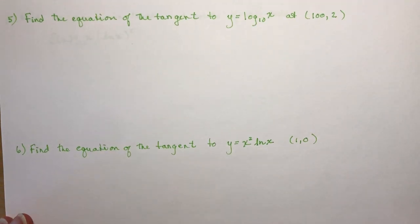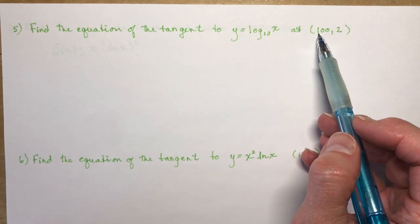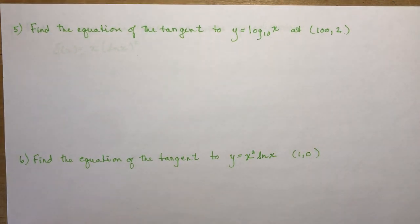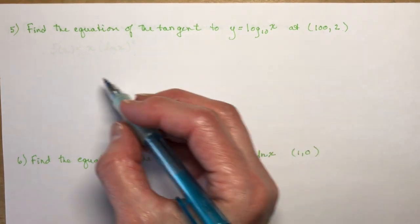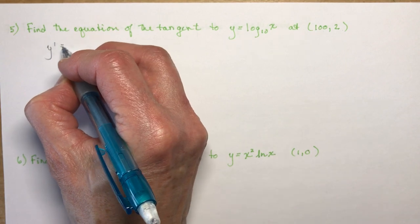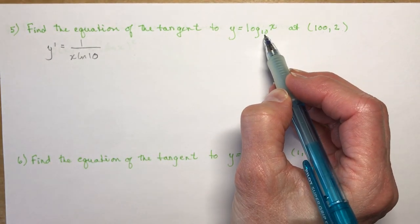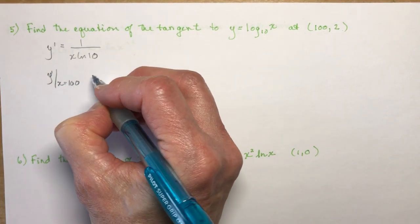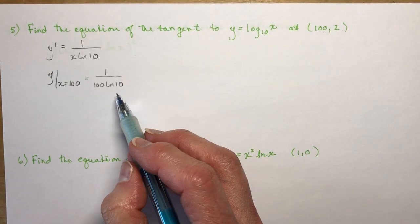Find the equation of the tangent to y equals log base 10 of x at the point (100, 2). We can verify: 10 raised to the power 2 gives 100, so that point is on the graph. To find the slope, we take the derivative: y prime equals 1 over x·ln 10. We want the slope when x equals 100, which gives 1 over 100·ln 10.